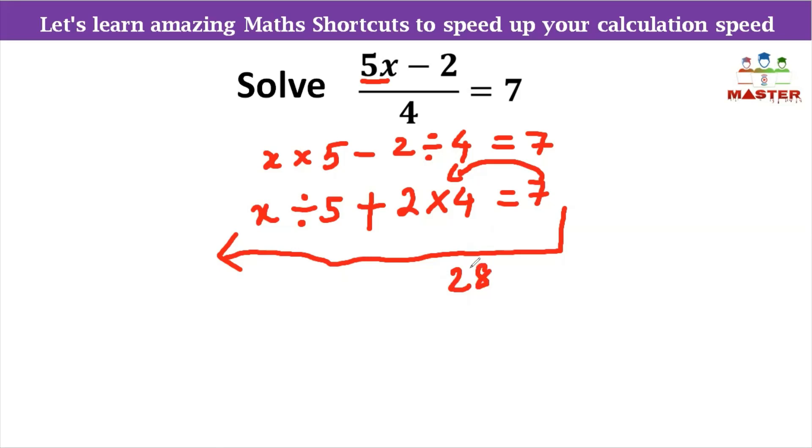Next, we have plus 2. So 28, we will add 2. Next, we will divide by 5. So 30, we will divide by 5. It is 6. So x is equal to 6. Therefore, the value of x is equal to 6.